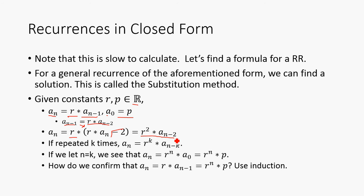If we repeat this k times, a_n is going to be r^k * a_(n-k). So that means if we let n equal k, we see that a_n is going to be r^n * a_0, or r^n * p.